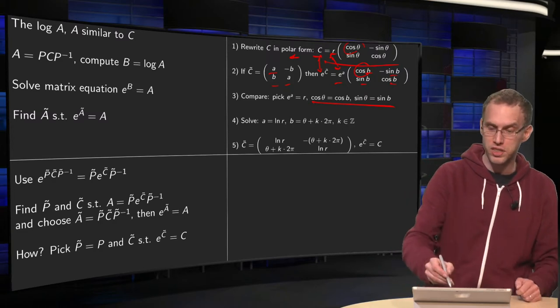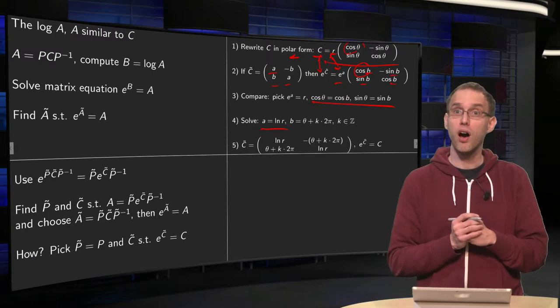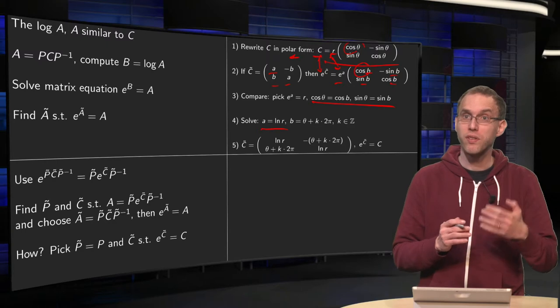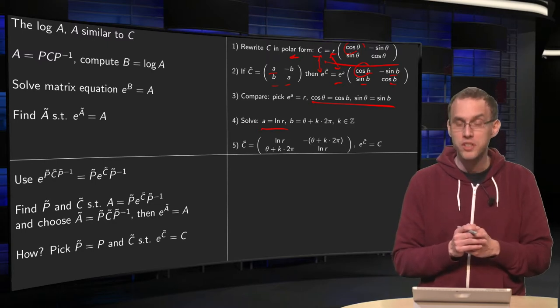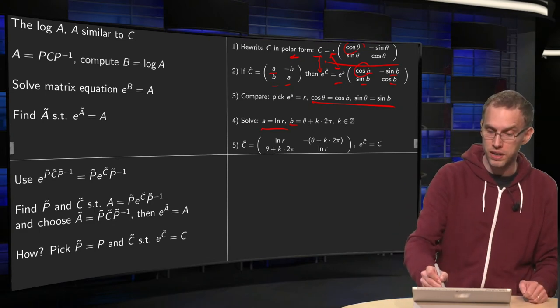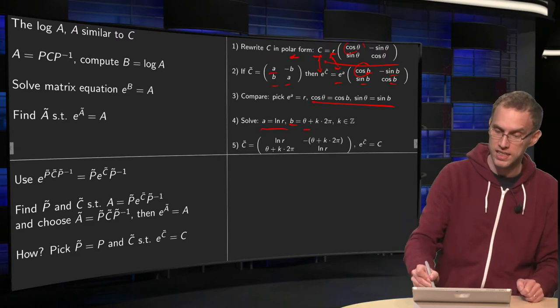Now, we solve those equations, the first one is trivial, you have A has to be the ln of R, and for the second one cosine theta equals cosine B, and sine theta equals sine B, so that B can be equal to theta, but you can add multiples of 2π, where k is in Z.